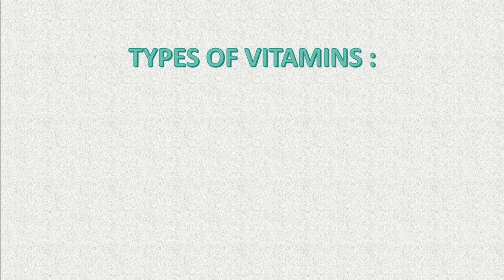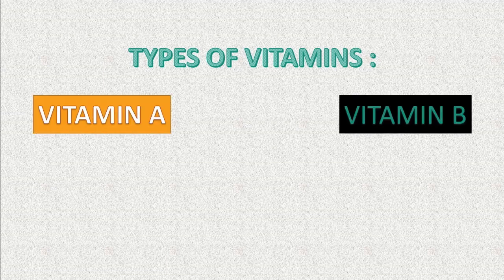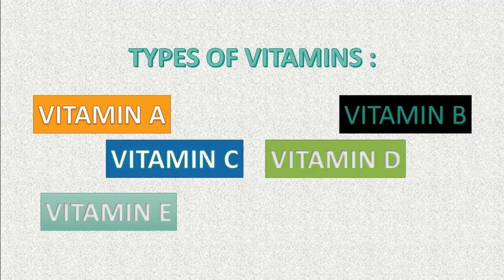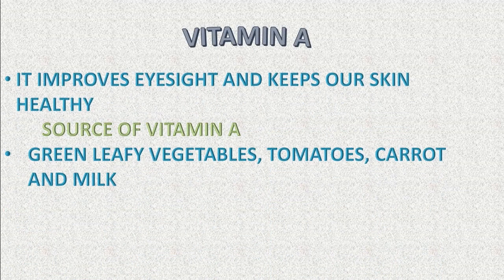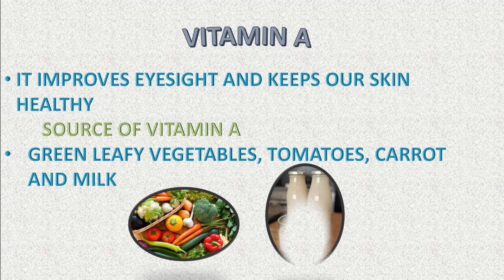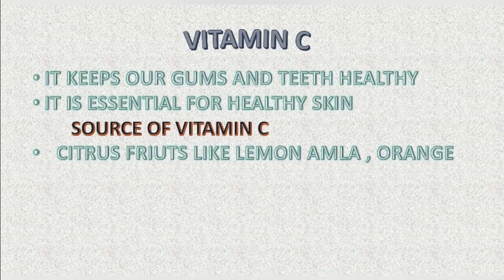There are many types of vitamins that our body needs, like vitamin A, vitamin B, vitamin C, vitamin D, vitamin E and vitamin K. Vitamin A improves eyesight and keeps our skin healthy. Green leafy vegetables, tomatoes, carrots and milk are some sources of vitamin A.